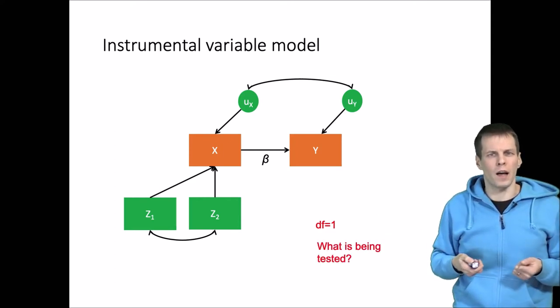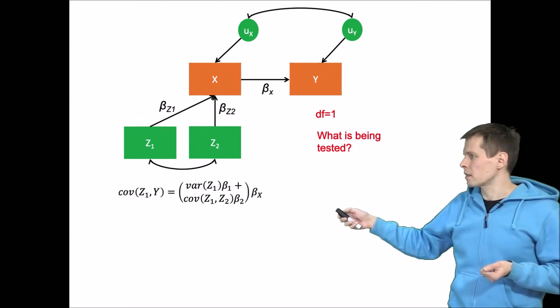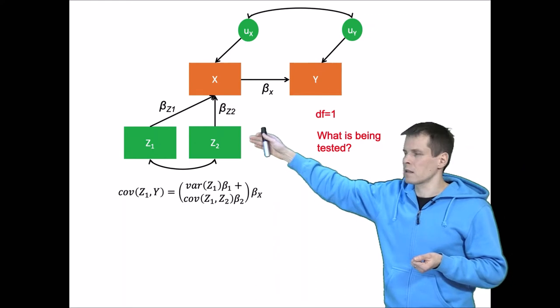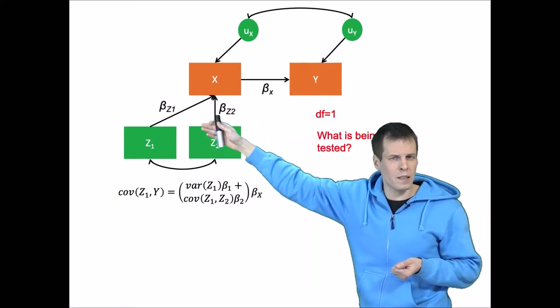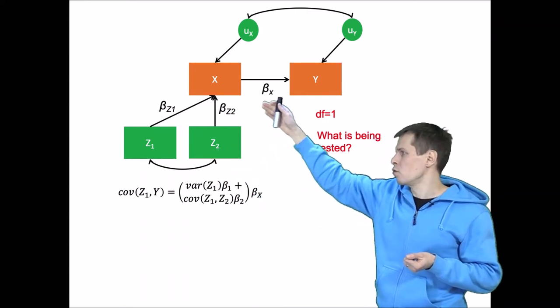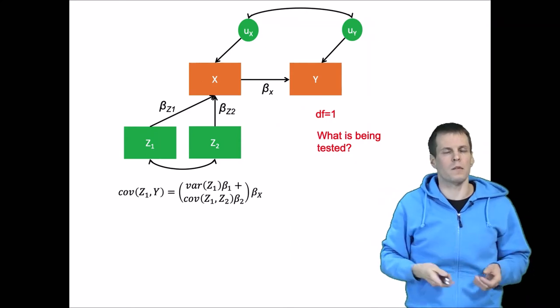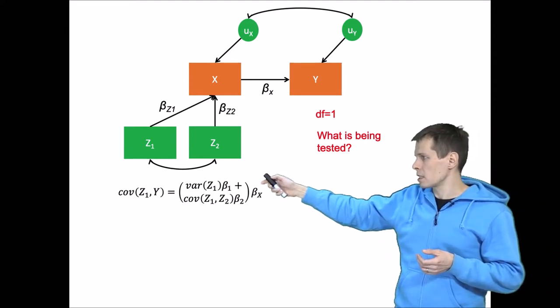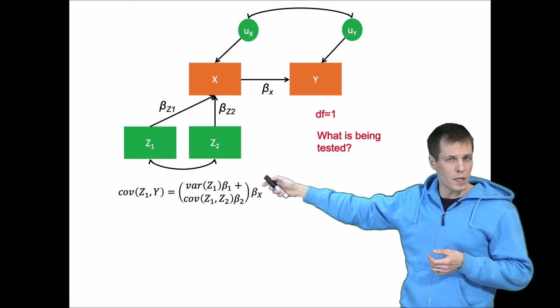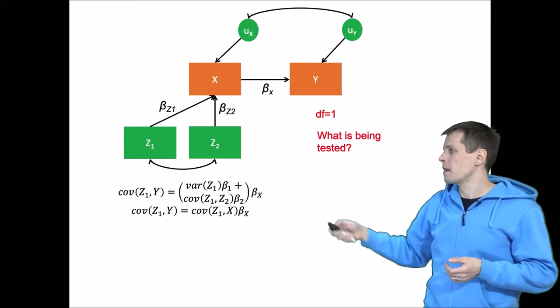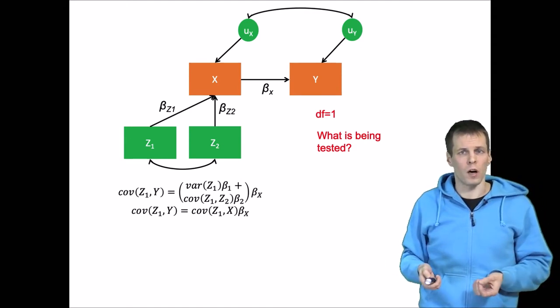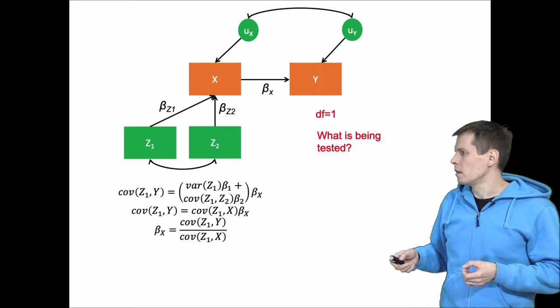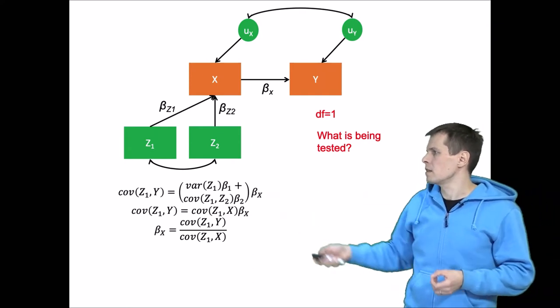We can do a little bit of algebra with covariances and we'll see that the covariance between Z and Y, Z1 and Y here, is the two paths from Z1 to X, directly through beta Z1 and here through Z2. So it's the sum of those multiplied by beta X. So that is a simple application of the tracing rules. And turns out that this can be simplified because this thing in parentheses is simply covariance between Z1 and X. So that's the covariance between Z1 and X. And so there we have it. We can solve for beta by dividing with covariance Z1 and Z1, and that solves us beta X.